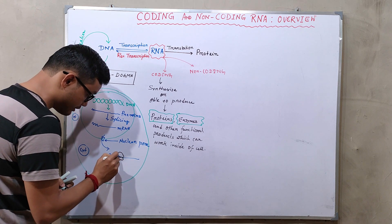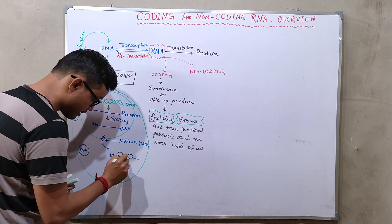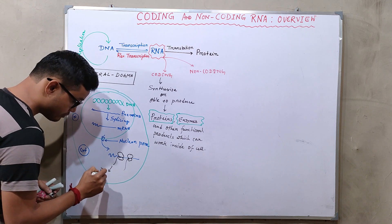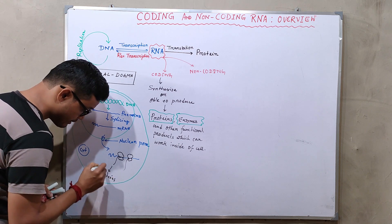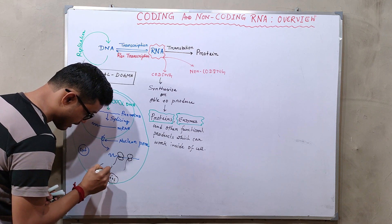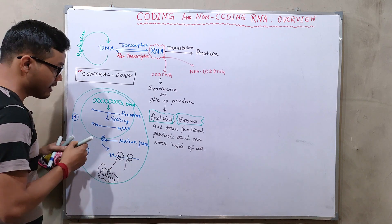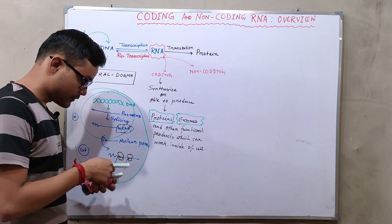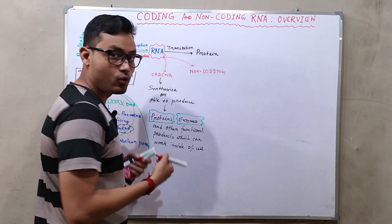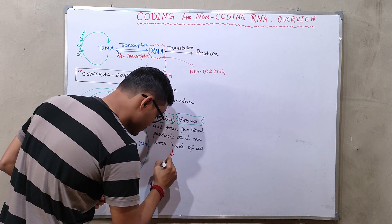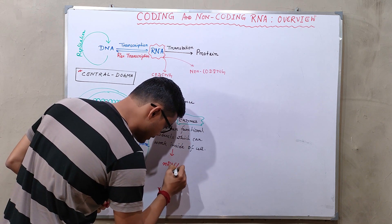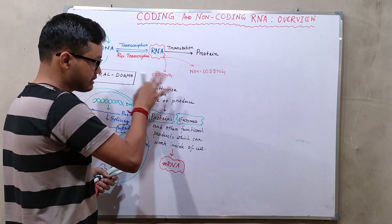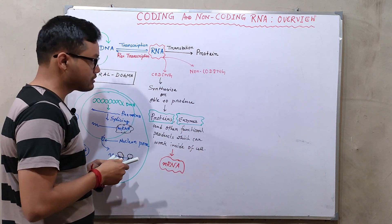The ribosome can bind with the mRNA and produces a functional copy of a polypeptide chain, and those polypeptide chains ultimately give rise to proteins. So these RNAs are known as coding RNAs. The example of a coding RNA is mRNA — messenger RNA is a coding RNA.